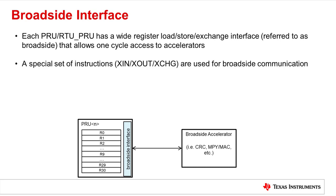The firmware uses a special set of instructions called XFIR to access the broadside interface and the accelerators attached to it. The XFIR instructions include: one, XIN, which is used to pull data from the accelerators; two, XOUT, used to push data to the accelerators; and three, EXCHANGE, which is used to simultaneously swap or exchange data between the core and the accelerator.